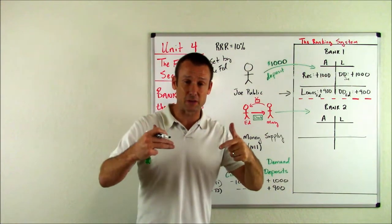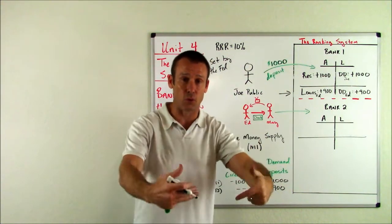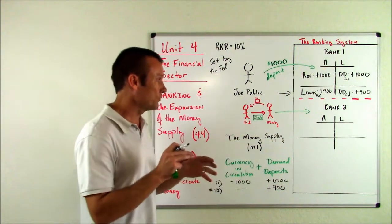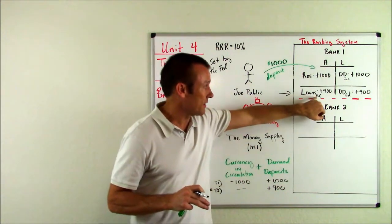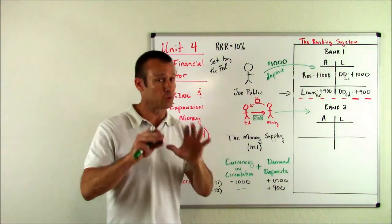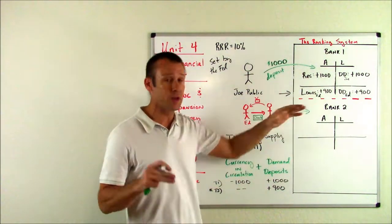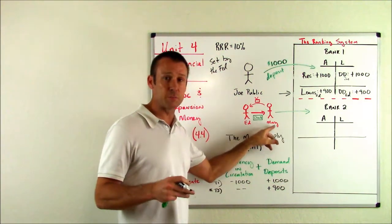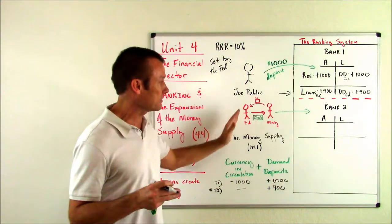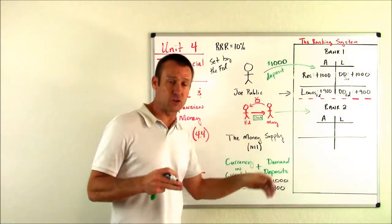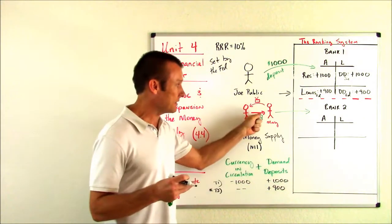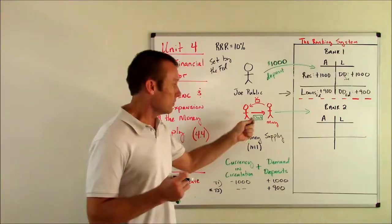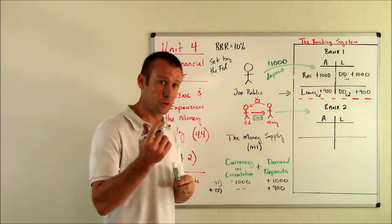Now we want to see how this expansion process can continue to unfold, how we can see the multiplication continue to happen. What's going to happen is we're going to have Ed walk out of bank one and go buy a good or service, which makes total sense. The only reason you take out a loan is to buy a good or service. Ed walks out. He goes and sees Mary. Mary sells TVs. So he buys a TV from Mary and he gives Mary a check. And we're going to have Mary take that check and go deposit it at bank two.